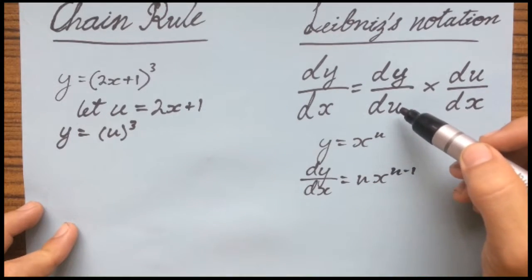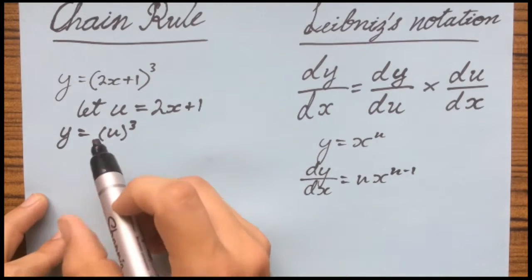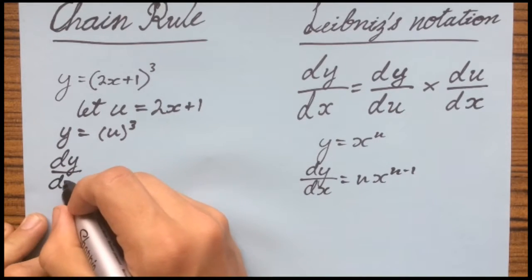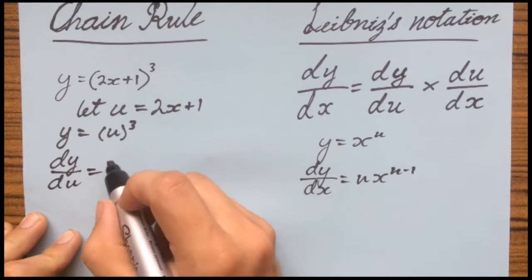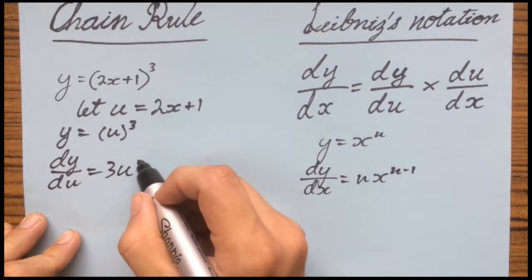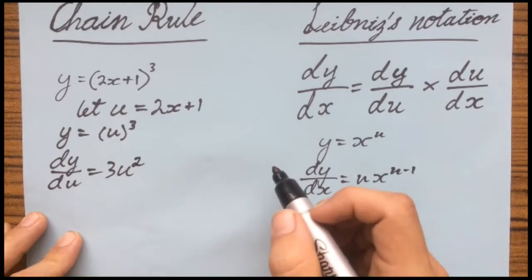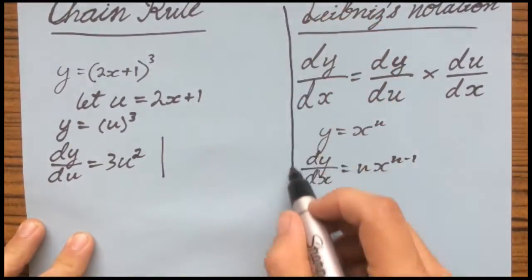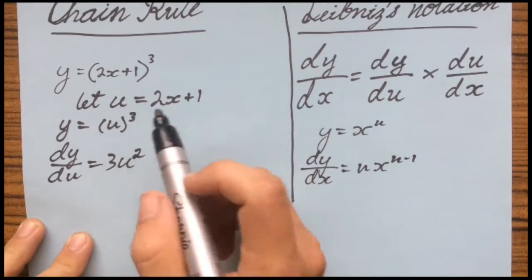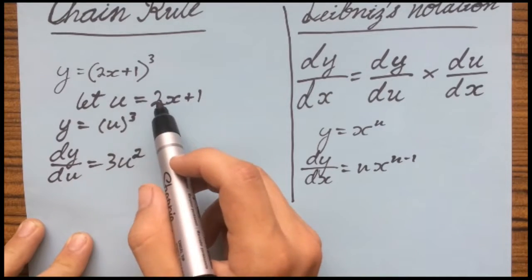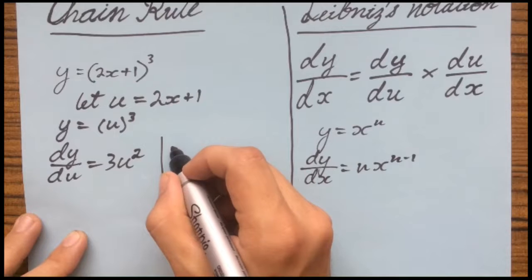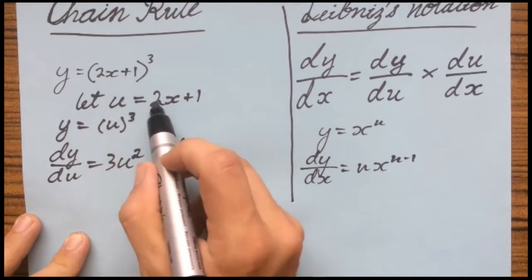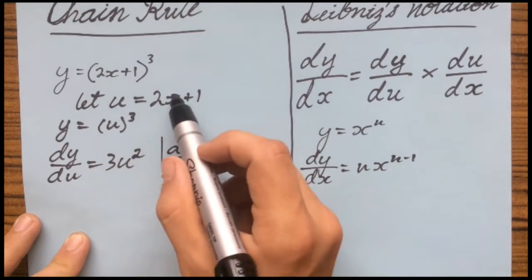That's where dy over du comes in handy, because y is the function and it's now with respect to u, not x. So we derive this: dy over du. We bring the 3 down and multiply it by u, then take 1 off the power, which gives u to the power of 2. Now we have to derive the inside, which is the u function — du with respect to x, because u is the new letter for this function and we're deriving with respect to the variable x.